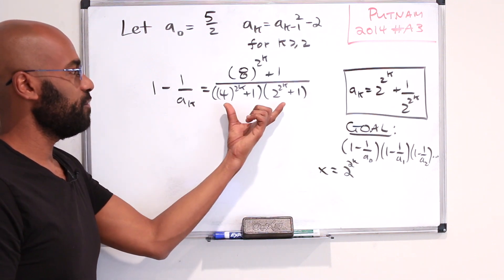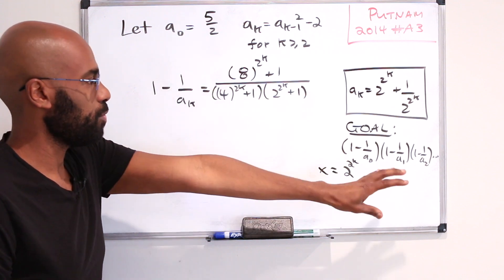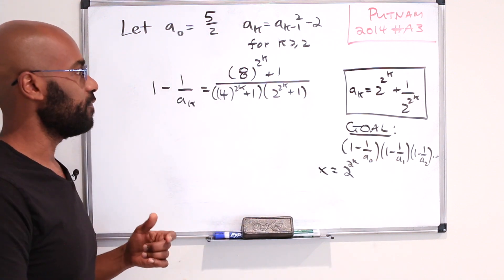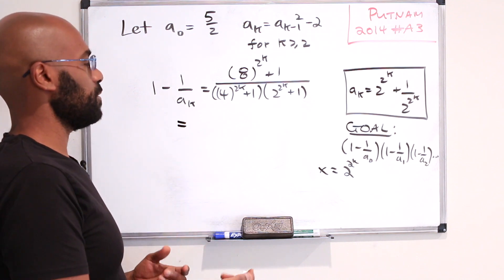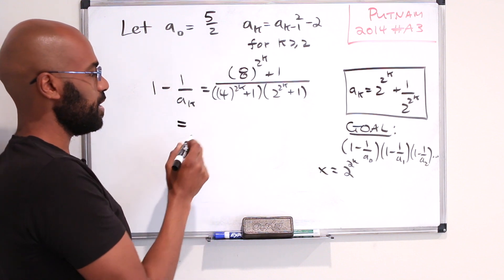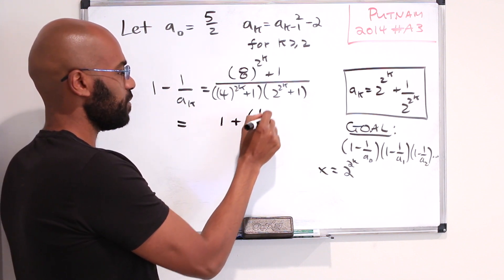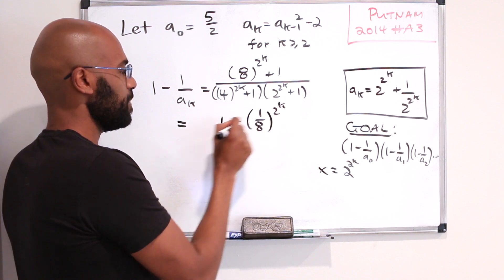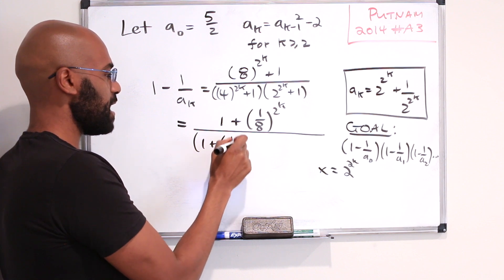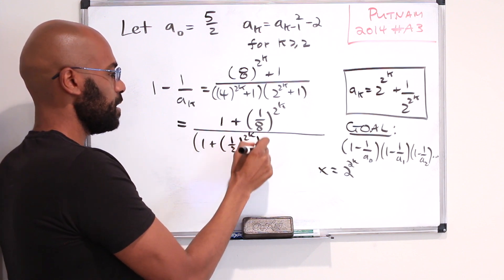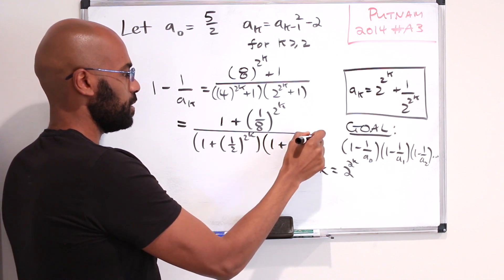One thing that's a problem with the way that we've written this is it doesn't seem like the individual pieces, if we were to take the products, would actually converge, especially the numerator. So what we can do is divide by the largest thing that we see here, which is 8^(2^k). If we do that, the numerator will become 1 plus (1/8)^(2^k), and the denominator would become (1 + (1/2)^(2^k)) times (1 + (1/4)^(2^k)).